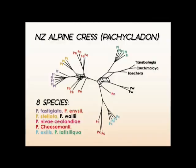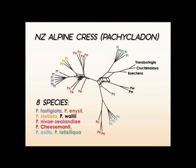At the Allan Wilson Centre, we are interested in the evolution of a group of eight species of New Zealand alpine cresses. Their scientific name is Pachycladon. These eight species of Pachycladon evolved from a common ancestor during the last million years in the Southern Alps of New Zealand, and occur nowhere else in the world. With the help of microarrays, we hope to predict the selection pressures that drove speciation in Pachycladon, and at the same time, hope to identify the genes that were under natural selection during the evolution of these eight species.